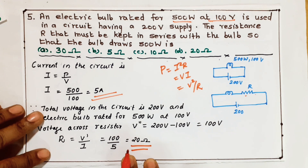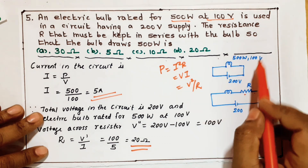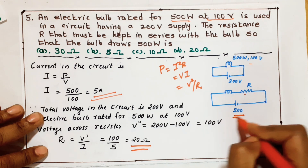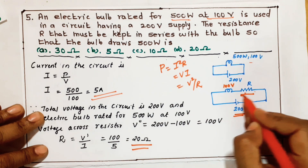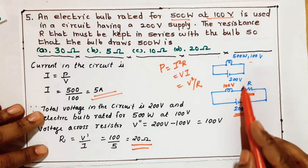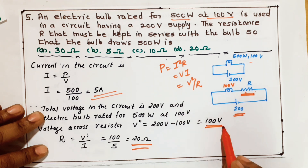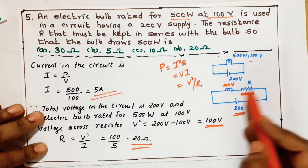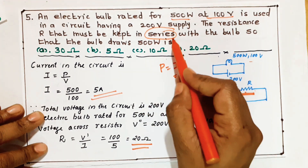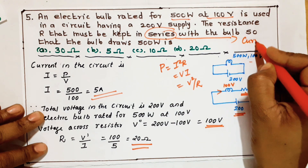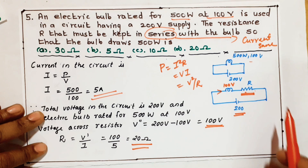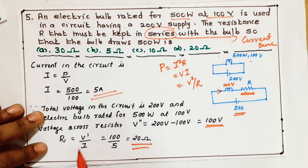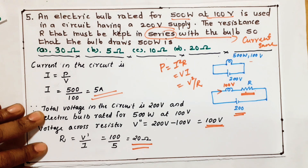Across the bulb we need 100 Volts. The supply is 200 Volts, so the remaining voltage across the series resistance is 200 − 100 = 100 Volt. Since the bulb and resistance are in series, the current through both is the same — 5 ampere. Using Ohm's law: R = V'/I = 100/5 = 20 ohm.